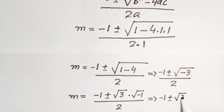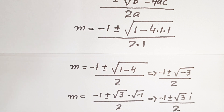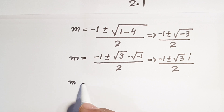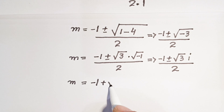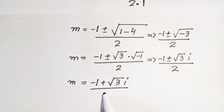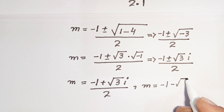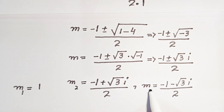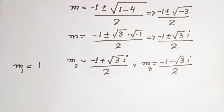Since the square root of minus 3 can be written as square root of 3 times i, we get m equals minus 1 plus or minus square root of 3 times i, all over 2. So we have three values of m: m1 equals 1, m2 equals minus 1 plus square root of 3 i all over 2, and m3 equals minus 1 minus square root of 3 i all over 2.